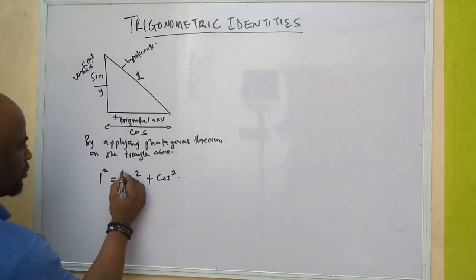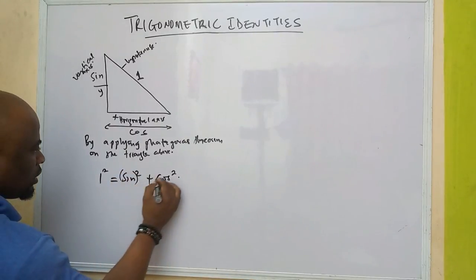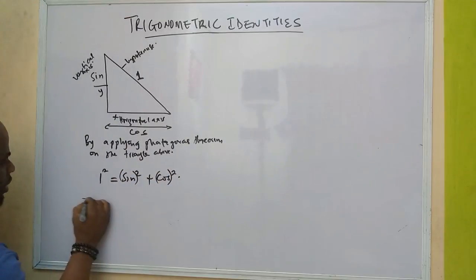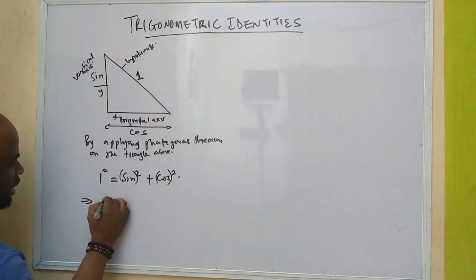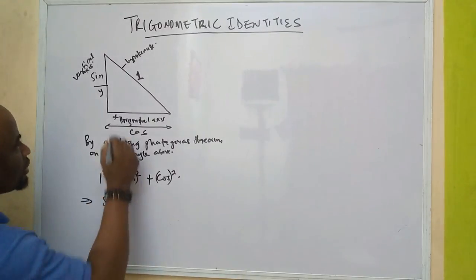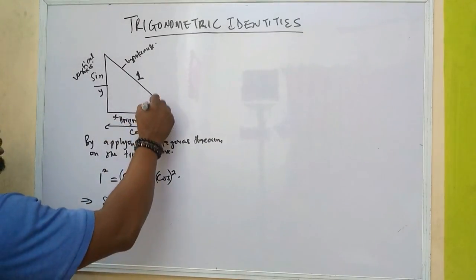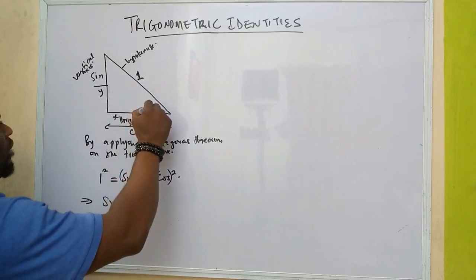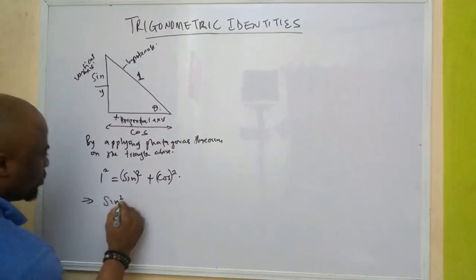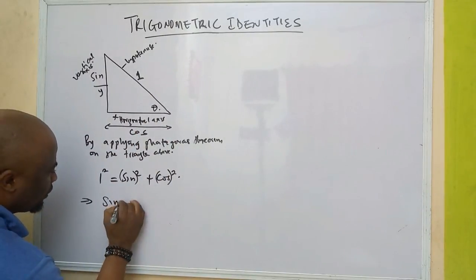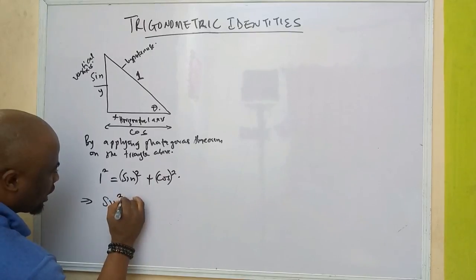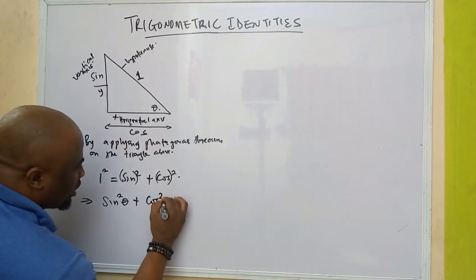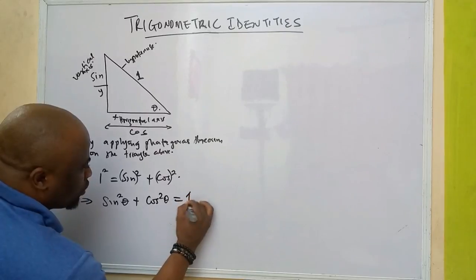So you have this. That means what we have here now is: we write it sin squared — let's say the angle. Let's say we have the angle theta here. So here we have sin squared theta plus cos squared theta equals one.